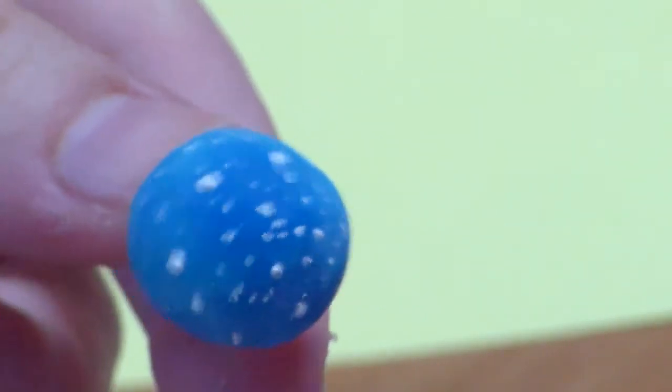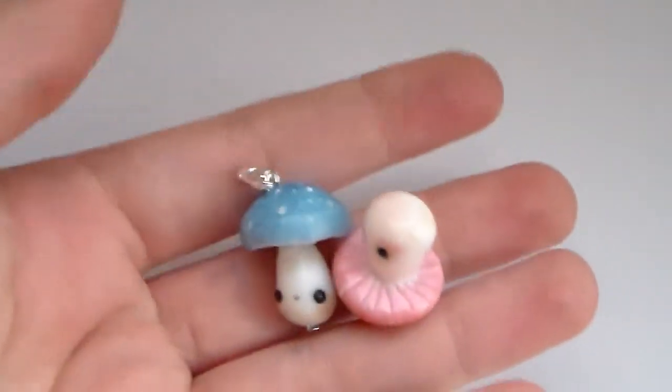Now when the paint is dried add some glaze and an eye pin or an eye screw to use it as a charm. And then you're done.